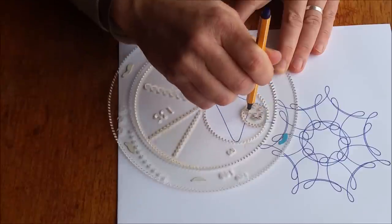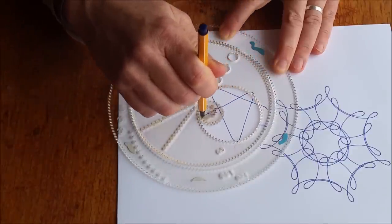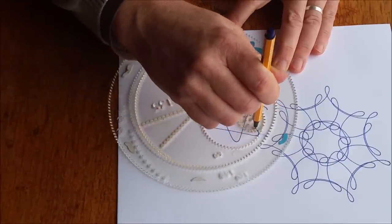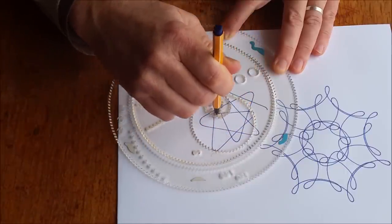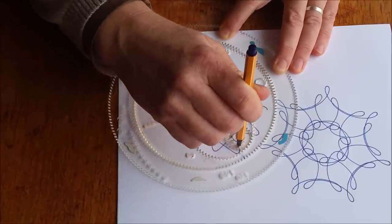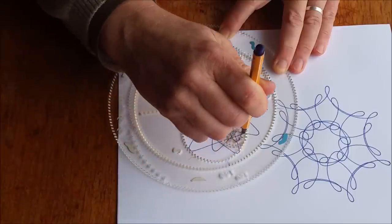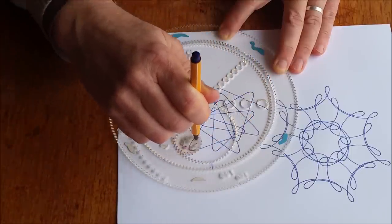And you see the smaller wheel now can move much more freely inside the wheel number 60. So it's not making tight loops.